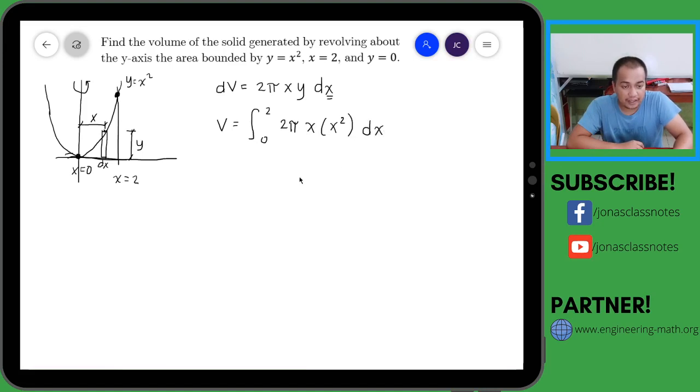Okay, so we can rewrite this as 2π—yung labas natin yung 2π because it's a constant—and then from 0 to 2 of x cubed dx.